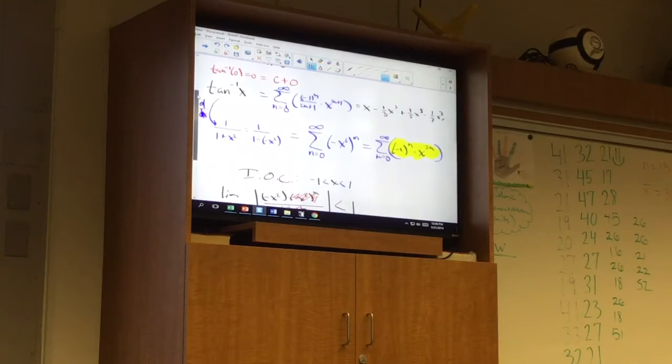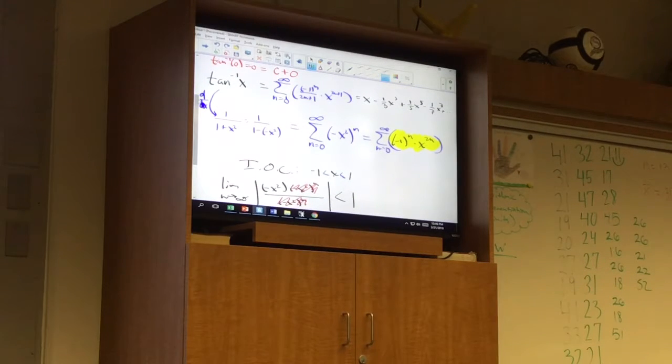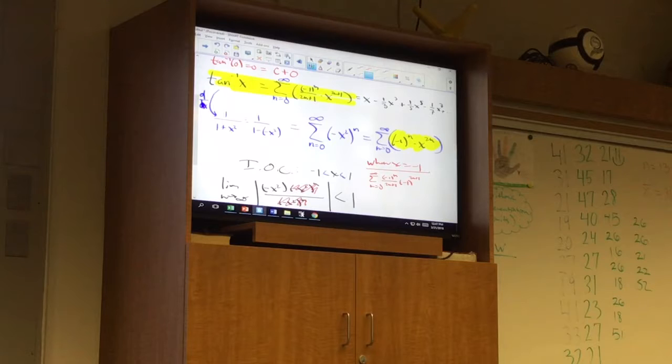So I need to check them. So I'm going to plug them into this guy. So when x is equal to negative one, let's see what we have. I have the summation as n goes from zero to infinity of negative one to the n over 2n plus 1 times negative one to the 2n plus 1. So what I'm saying is this is equal to the summation as n goes from zero to infinity of negative one to the 2n plus... or so...